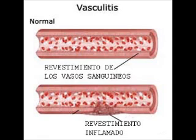Some 20 primary forms of vasculitis are recognized, and classification schemes have been attempted to group them according to the vessel size, role of immune complexes, presence of specific autoantibodies — which are antibodies formed against your own tissue — and granuloma formation, organ tropism, and even population demographics. These are the criteria on which vasculitis is basically divided.